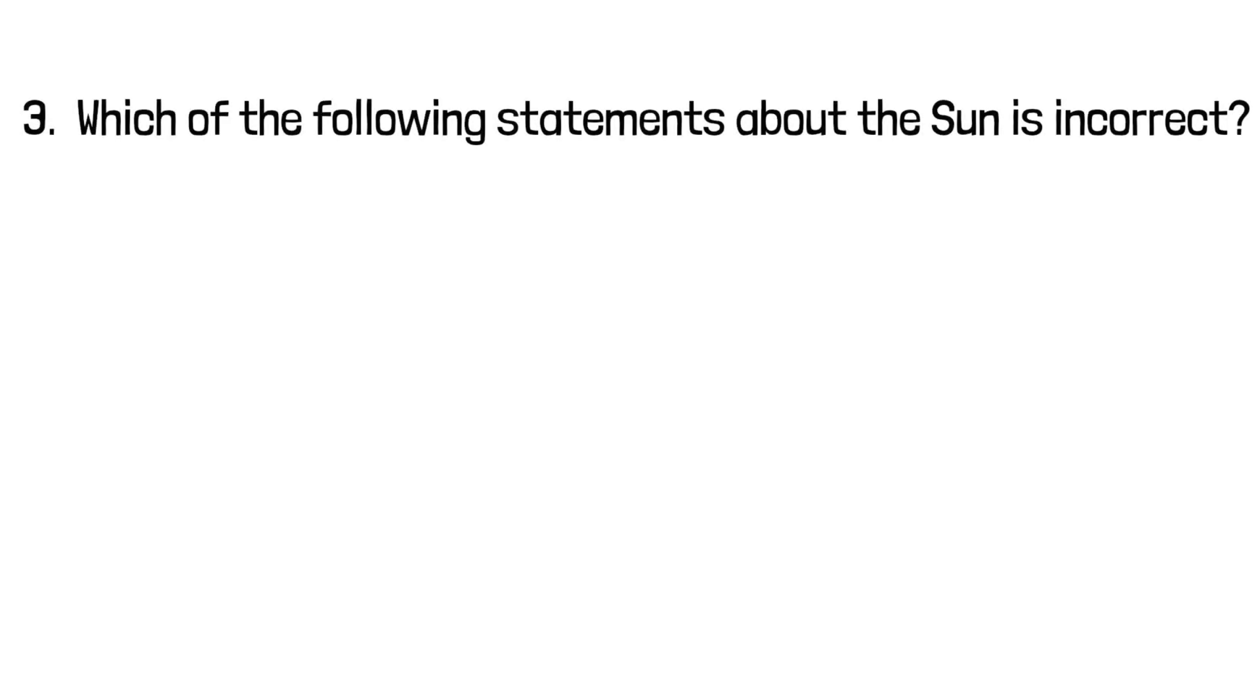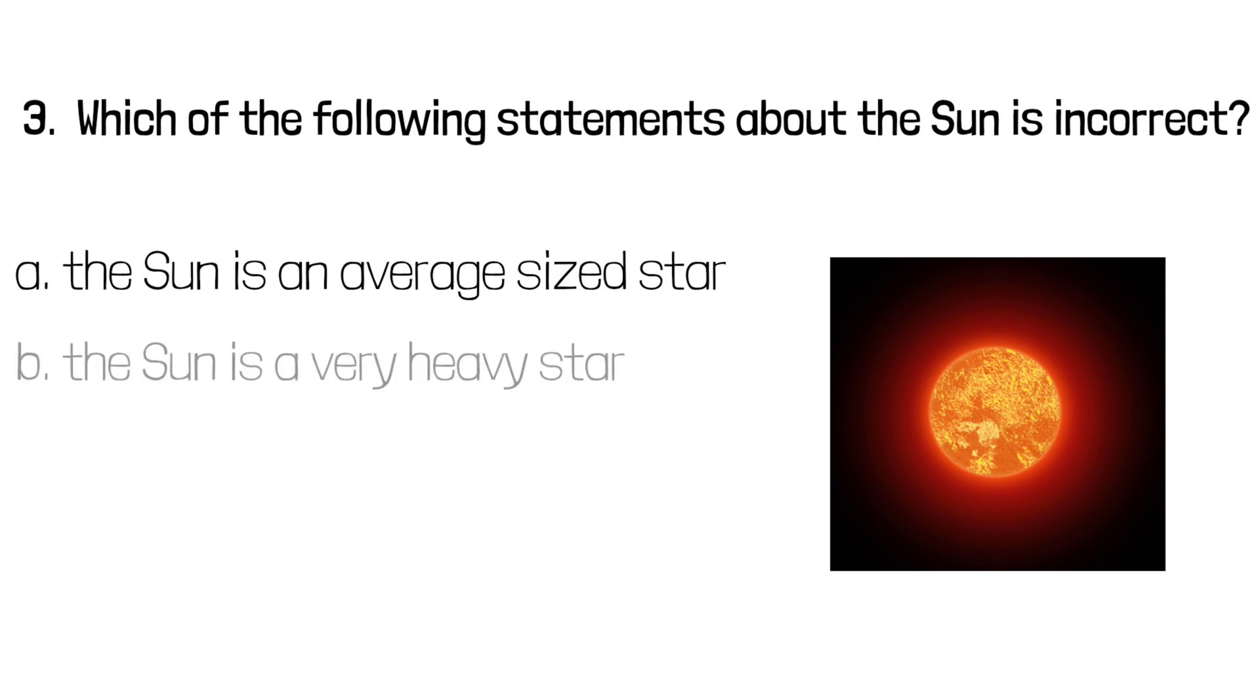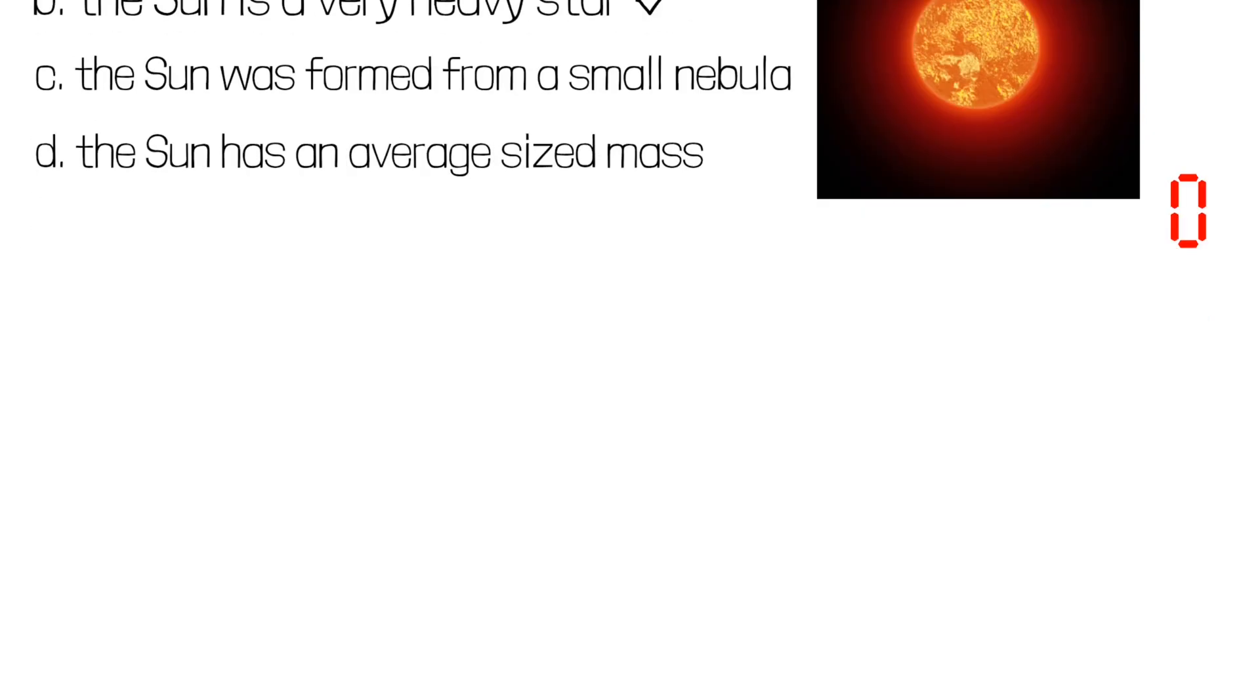Question 3: Which of the following statements about the Sun is incorrect? A the Sun is an average size star. B the Sun is a very heavy star. C the Sun was formed from a small nebula. Or D the Sun has an average size mass. So which of the statements is incorrect? The incorrect statement is B the Sun is a very heavy star.